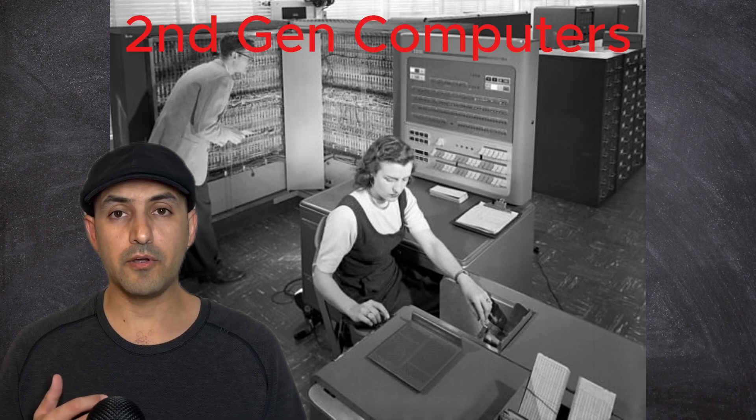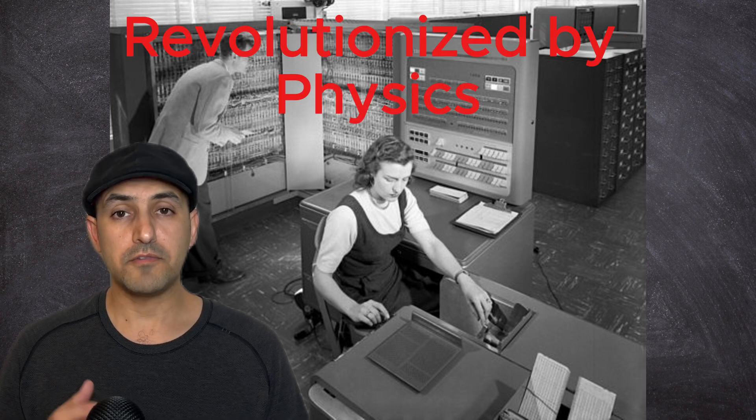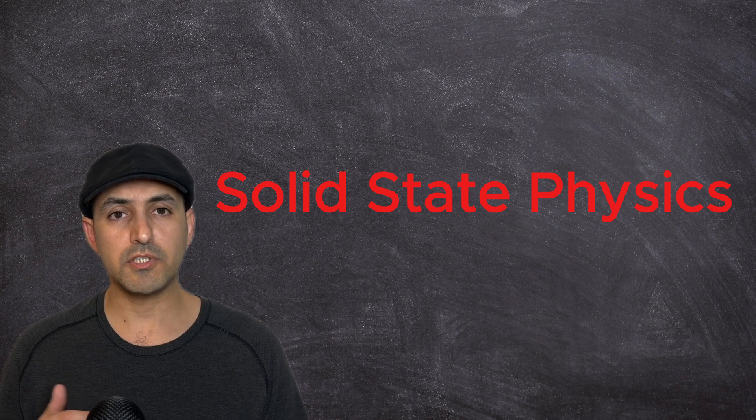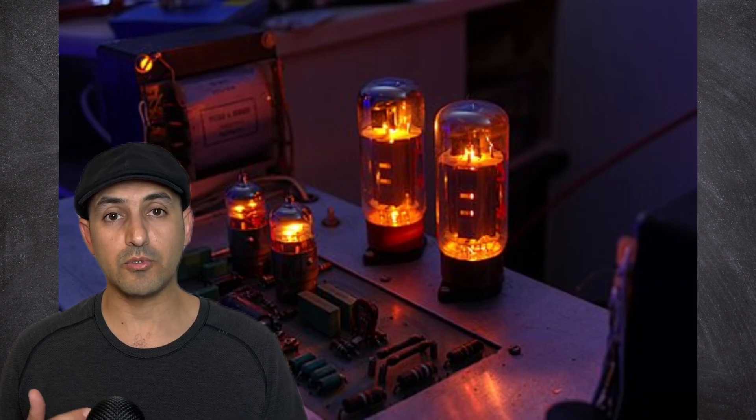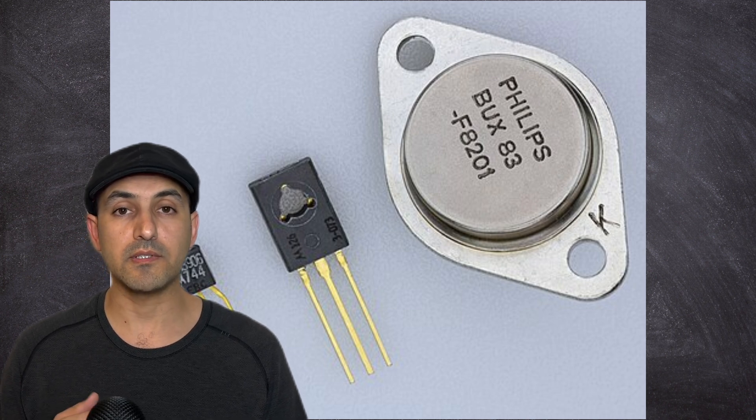In the case of the IBM 700 series, or the second generation of computers in general, physics stepped in and introduced semiconductors, which then led to replacing the vacuum tubes with transistors, revolutionizing computers in all aspects.